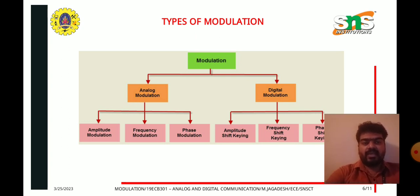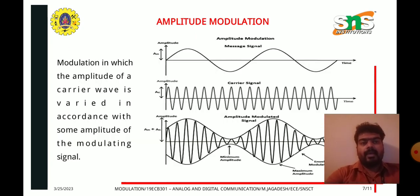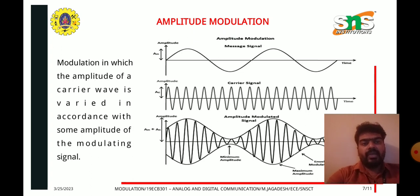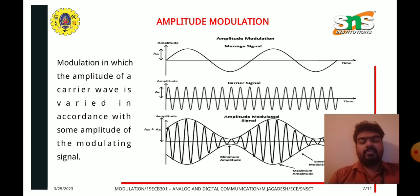In amplitude modulation, there is an input signal, a carrier signal, and the resulting amplitude modulated waveform. According to amplitude modulation, the amplitude of the carrier signal is varied in accordance with the amplitude of the input signal.